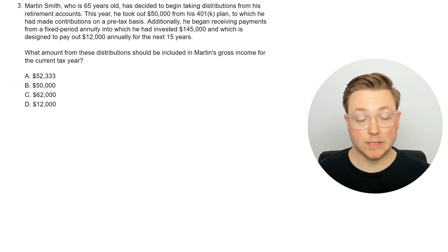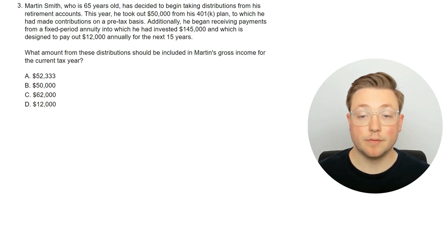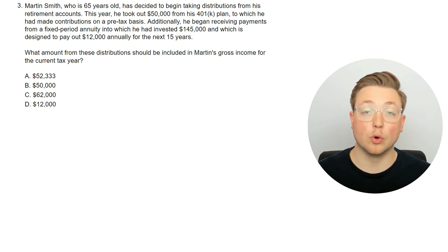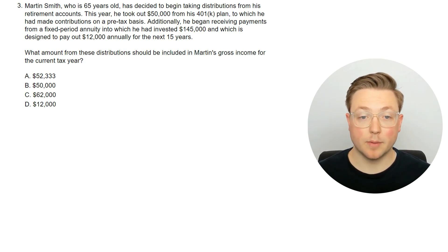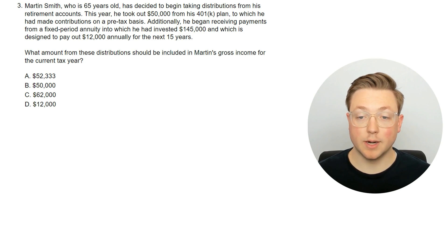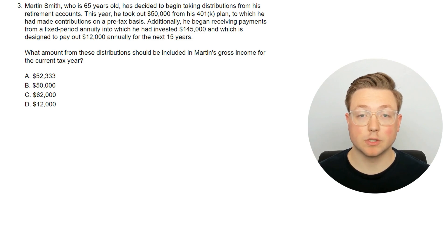Here's the next question. Martin Smith, who is 65 years old, has decided to begin taking distributions from his retirement accounts. This year, he took out $50,000 from his 401k plan, to which he had made contributions on a pre-tax basis — meaning his contributions were taken straight out of his paycheck before being taxed. Additionally, he began receiving payments from a fixed period annuity into which he had invested $145,000, designed to pay out $12,000 annually for the next 15 years. What amount from these distributions should be included in Martin's gross income for the current tax year?